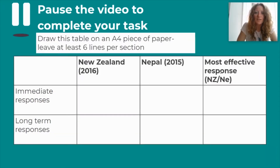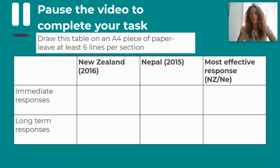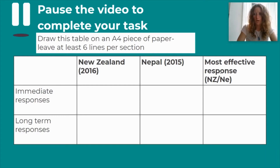Today's session will take a similar format to when we looked at the effects of earthquakes, but this time I'd like you to draw a table on an A4 sheet of paper with at least six lines per section. It will have four columns: leave the first blank, then 'New Zealand 2016', 'Nepal 2015', and 'Most Effective Responses' in the last column. It will have three rows: leave the first blank, then 'Immediate Responses', then 'Long-Term Responses'. Pause the video, draw that table using a whole sheet of paper — don't squish it — and then we'll crack on.